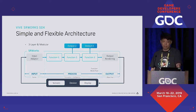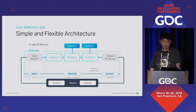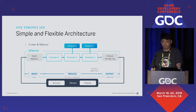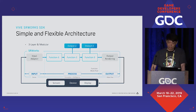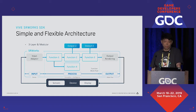Input is usually a hardware-dependent driver to get sensor data. Output is typically a rendering driver to show the result on the display. Process is a function pool — you can connect each function to compose the pipeline, or you can get the desired result in the middle of the pipeline, just like output 2 and 3, or pass it to the renderer to show on the display. If you want to add a new feature, you can drop the function in the pool and assign its input and output respectively. It is very simple and flexible.